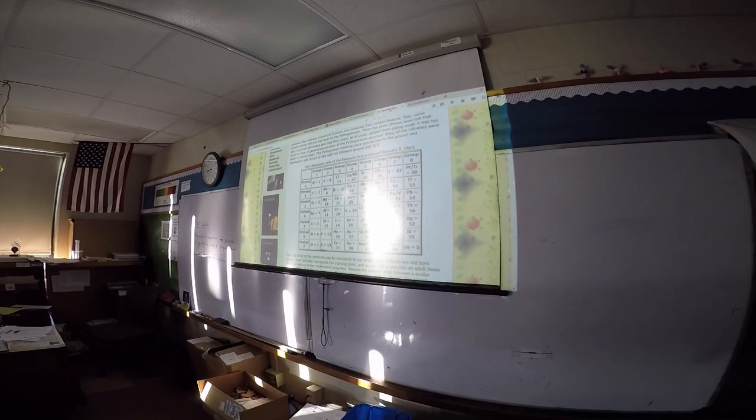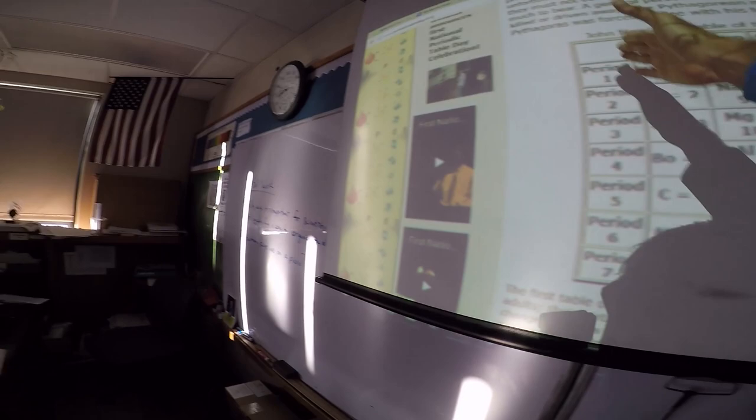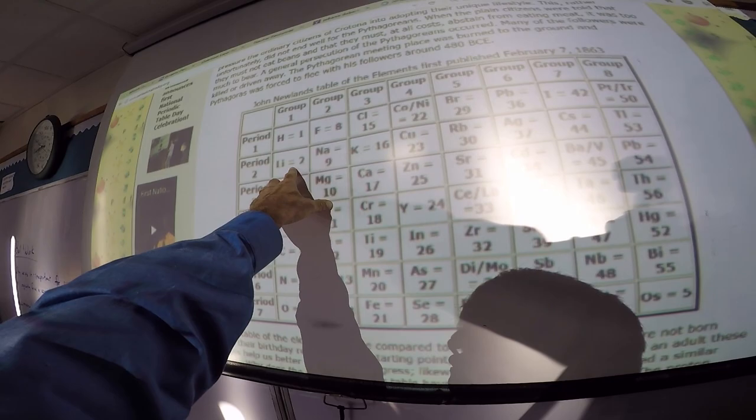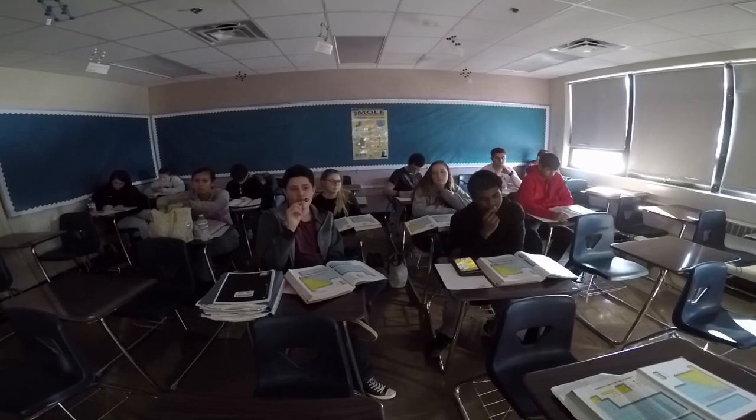The original table was published February 7th, 1863. His table was a little different — he did not put the periods where the periods are in the current periodic table. He had periods going one way and groups going the other. You can see the pattern: lithium, sodium, potassium, rubidium. He's placing them kind of backwards, which caused some confusion about how to organize the octave pattern.